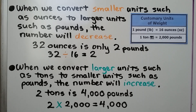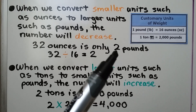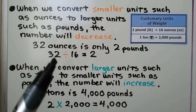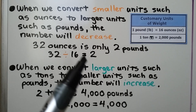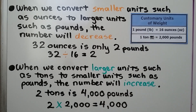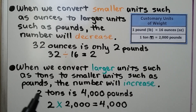When we convert smaller units, such as ounces, to larger units, such as pounds, the number will decrease. Thirty-two ounces is only two pounds — it decreased. Thirty-two divided by sixteen equals two, because there are sixteen ounces in each pound. When we convert larger units, such as tons, to smaller units, such as pounds, the number will increase. Two tons is four thousand pounds, because one ton is two thousand pounds.